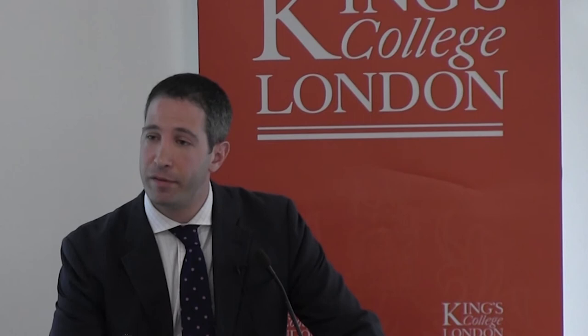Part two is a randomized study of 75 patients assessing the primary aim of acceptability, with secondary aims including quality of life, peacefulness, anxiety, depression, and treatment satisfaction in a pre-post design. Randomization will be to no ACP intervention, video alone, or the full PEACOCK intervention — where patients watch a video, go through the values questions process, receive a transcribed illness narrative, and can share it with their physicians if they wish.